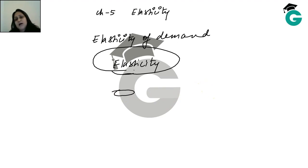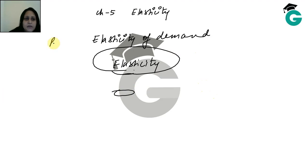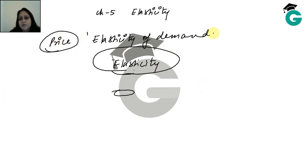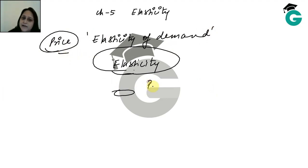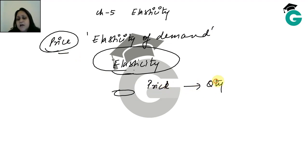Elasticity as a concept works the same way. When we say elasticity of demand, we normally mean price elasticity of demand — price is understood. So what we mean is: when price changes, that is my cause, and because of that the quantity changes — that change in quantity is elasticity.